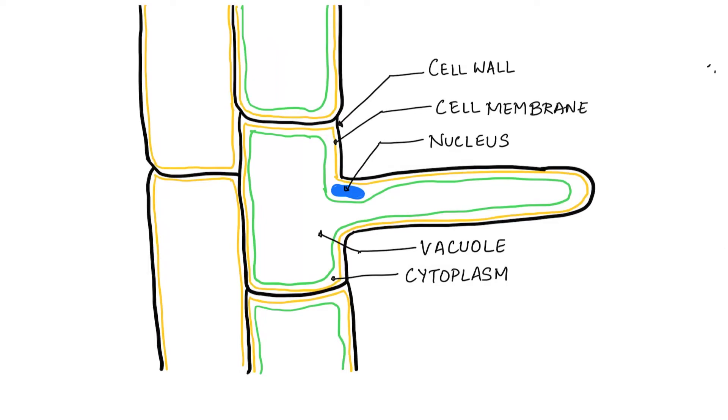Once you have completed the diagram, make sure that you give proper title to the diagram that is you have to write sectional view of the root hair cell. This is important as you may lose marks if you do not write the title of the diagram.